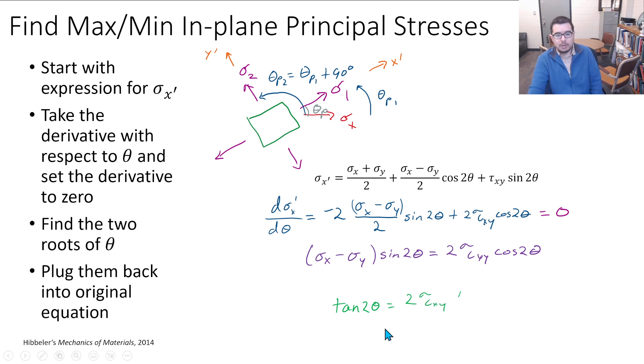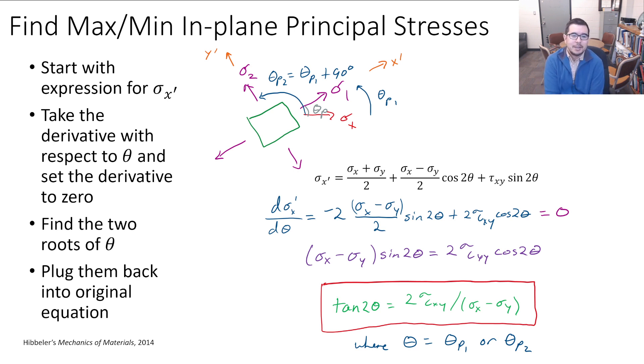We can take the derivative of this expression and set it equal to zero. When we do that, we get an expression that tells us what the angles might be that are associated with this condition where the derivative of sigma x prime with respect to the angle is equal to zero. Performing a little bit of algebra, we can get down to this expression. This theta here is associated with an orientation for max or min principal stress in plane. This equation could be useful when we introduce Mohr's circle, the highlight of this course, which we'll do in our next session.